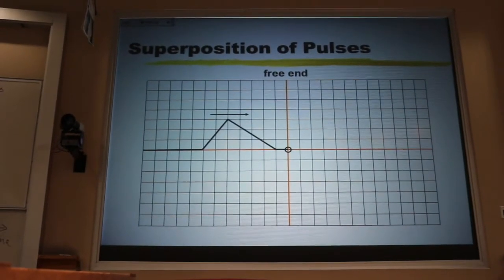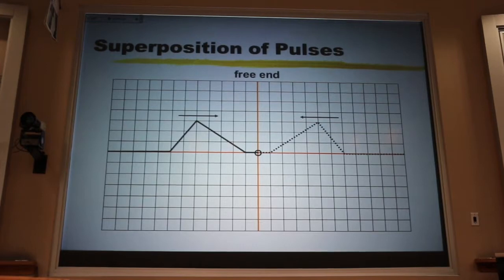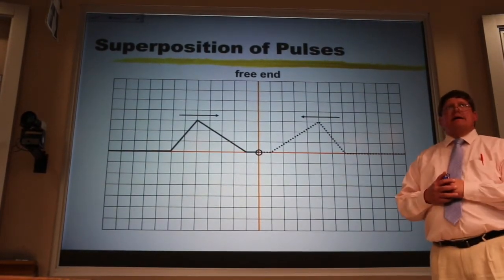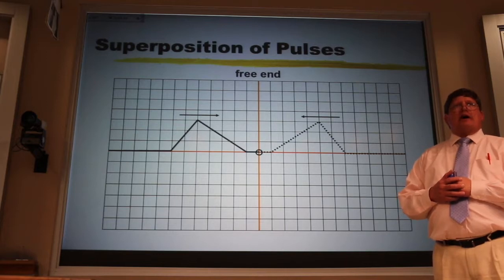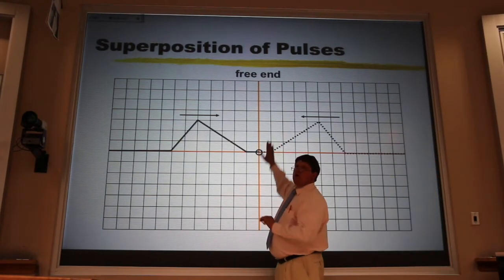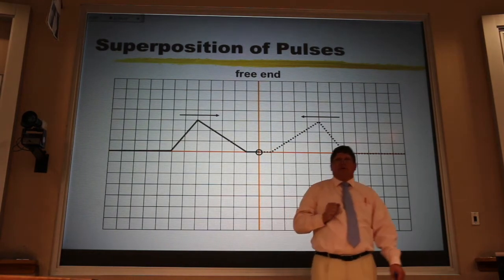We talked about it on Monday, that when a pulse comes into a free end, we pretend that the reflected pulse is coming back on the same side. And that means that when they meet in the middle, I get an overshoot. The amplitude is twice that of the original pulse.